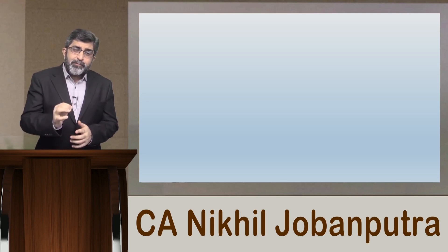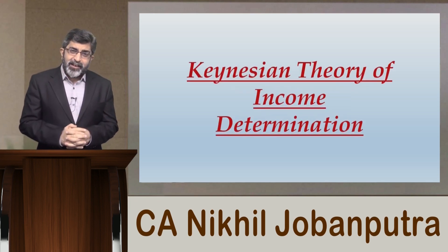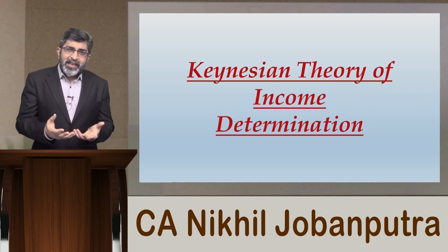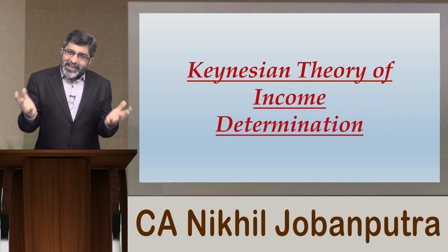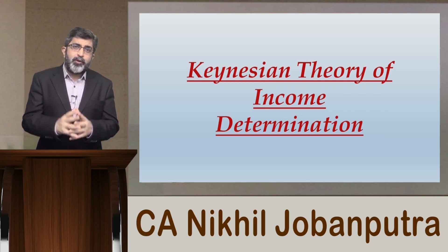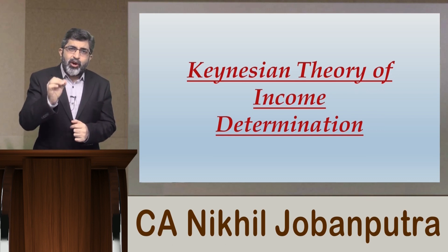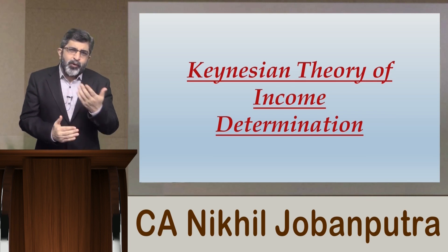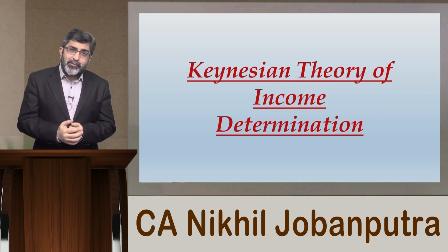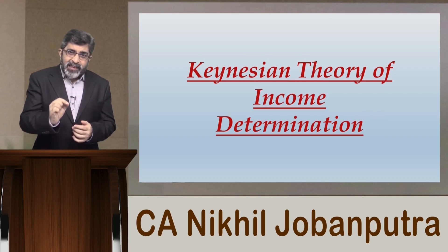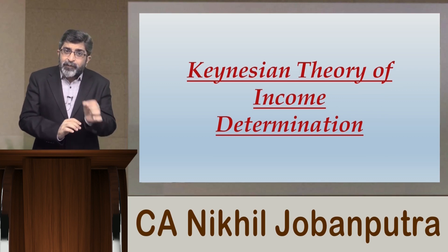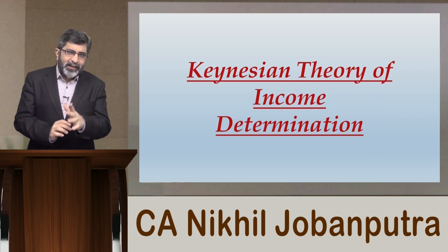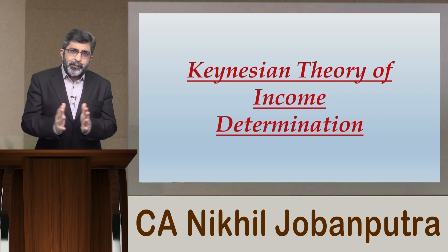Here we are focusing on one very important historical theory, generally considered as Keynesian theory of income determination. This is not about determining the income of an individual or any individual business sector — it is for the entire economy. Taking the nation's viewpoint, it is still determination of national income. National income precisely is the net national product at factor cost — NNP at factor cost.